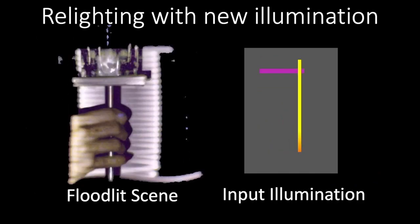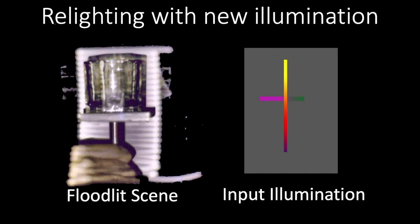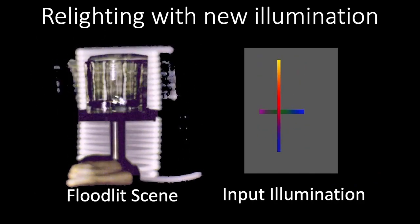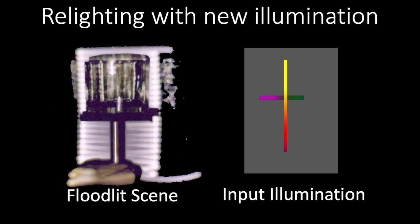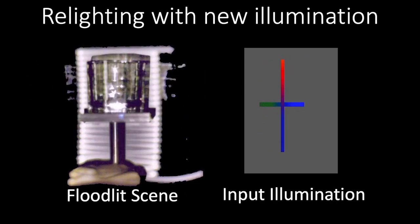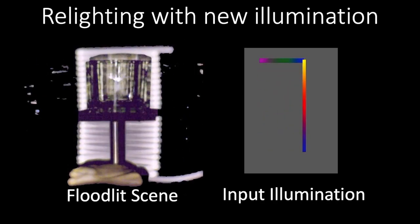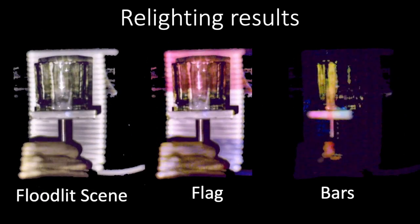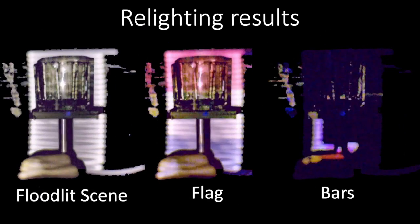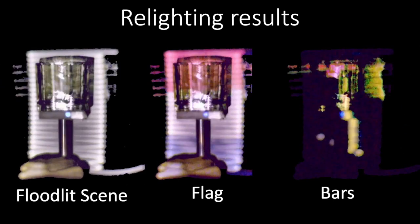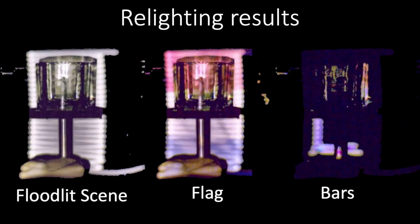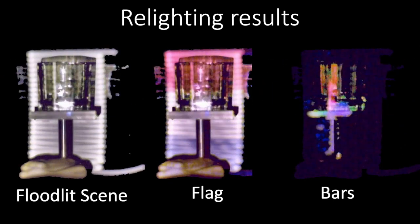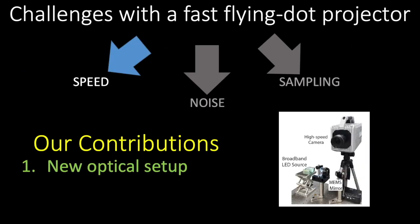Capturing the light transport allows post-capture relighting to any desired illumination. Here we change the input illumination to a synthetically generated video of colorful bars. Now we show, side by side, the floodlit, flag, and bar illuminated versions of the scene. Note that all of these, including the floodlit, are digitally rendered results using the light transport captured by our system.